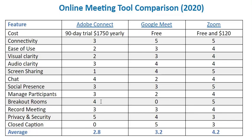Adobe Connect does provide access to breakout rooms — small rooms that a larger group can be divided into for small group discussions. Adobe is pretty good at that, it just takes a while to get people into groups. Google Meet doesn't have that feature. Zoom has the feature and allows you to divide hundreds of people into small groups almost instantly. I really like that feature in Zoom and I think it works well.